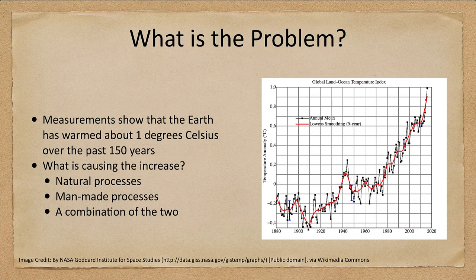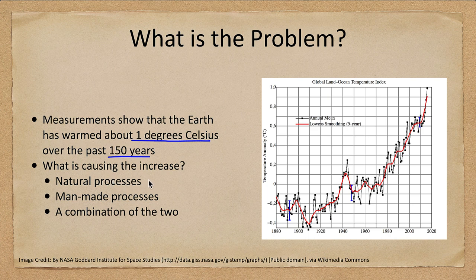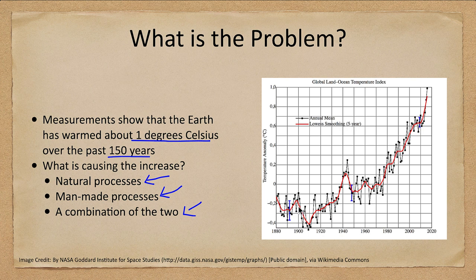So what is the problem when we talk about climate change? Measurements show that the Earth has warmed about one degree Celsius over 150 years. While that may not sound like a lot, it is a big increase for just 150 years. The question is what is causing this: is it something natural, is it man-made, or some combination of the two? Here we see the graph showing temperatures from 1880 and how they have increased pretty drastically, especially over the last few decades.